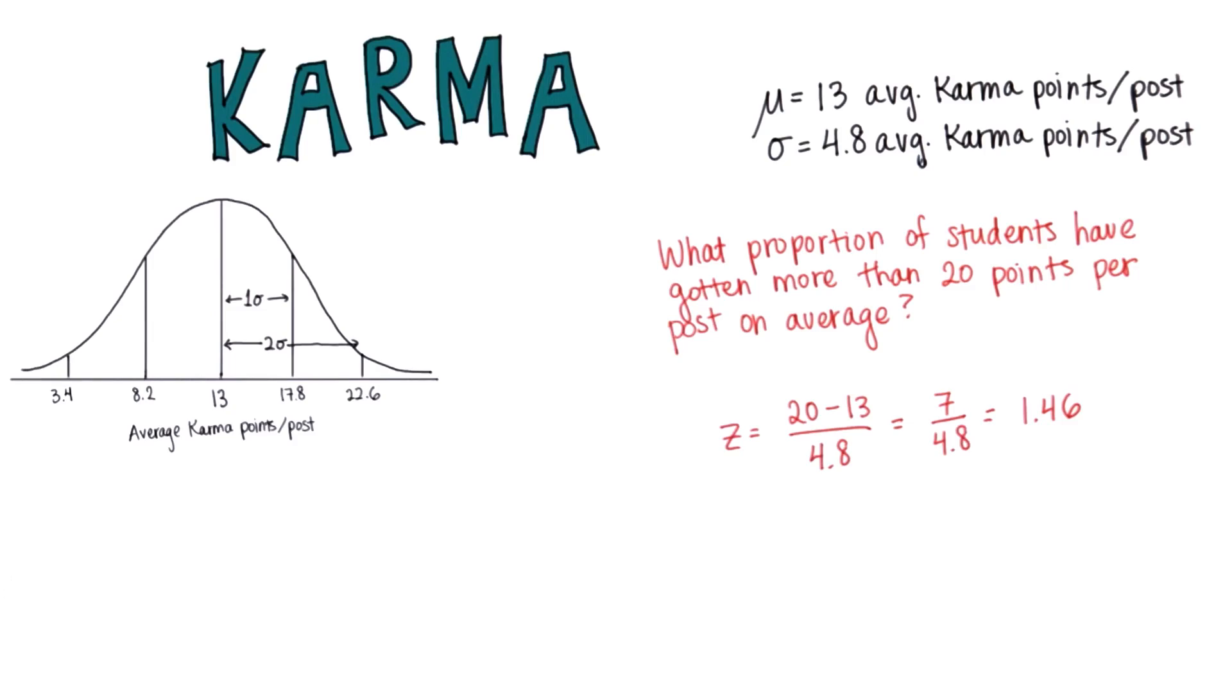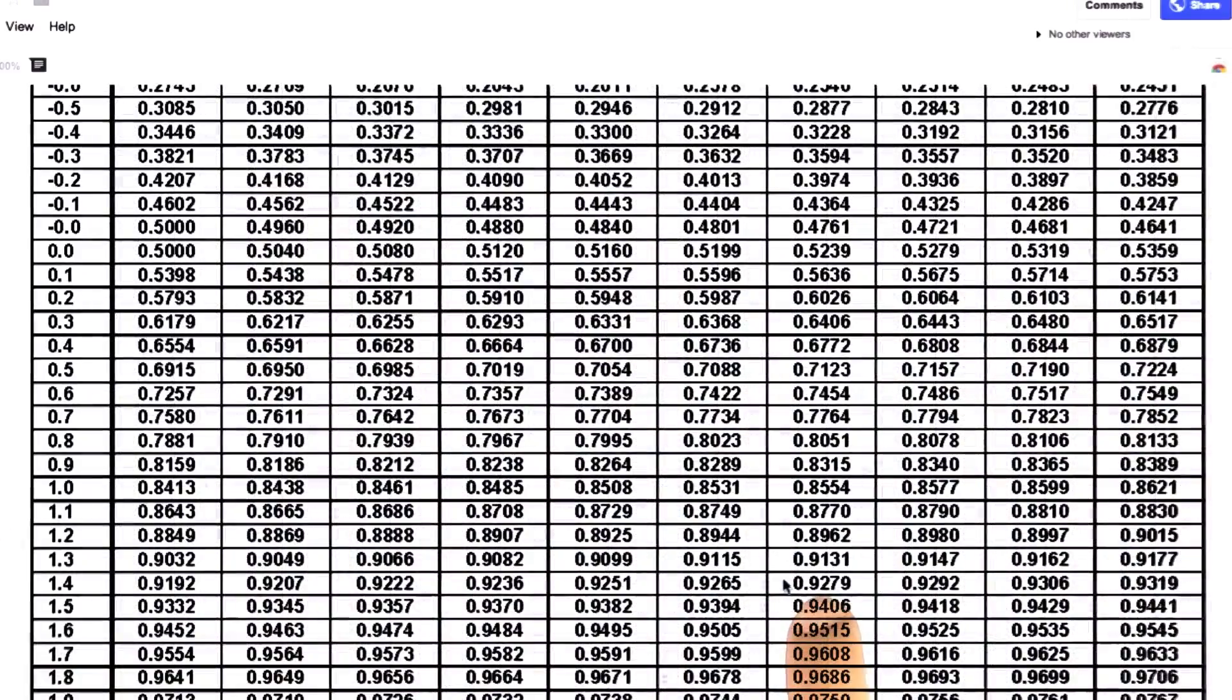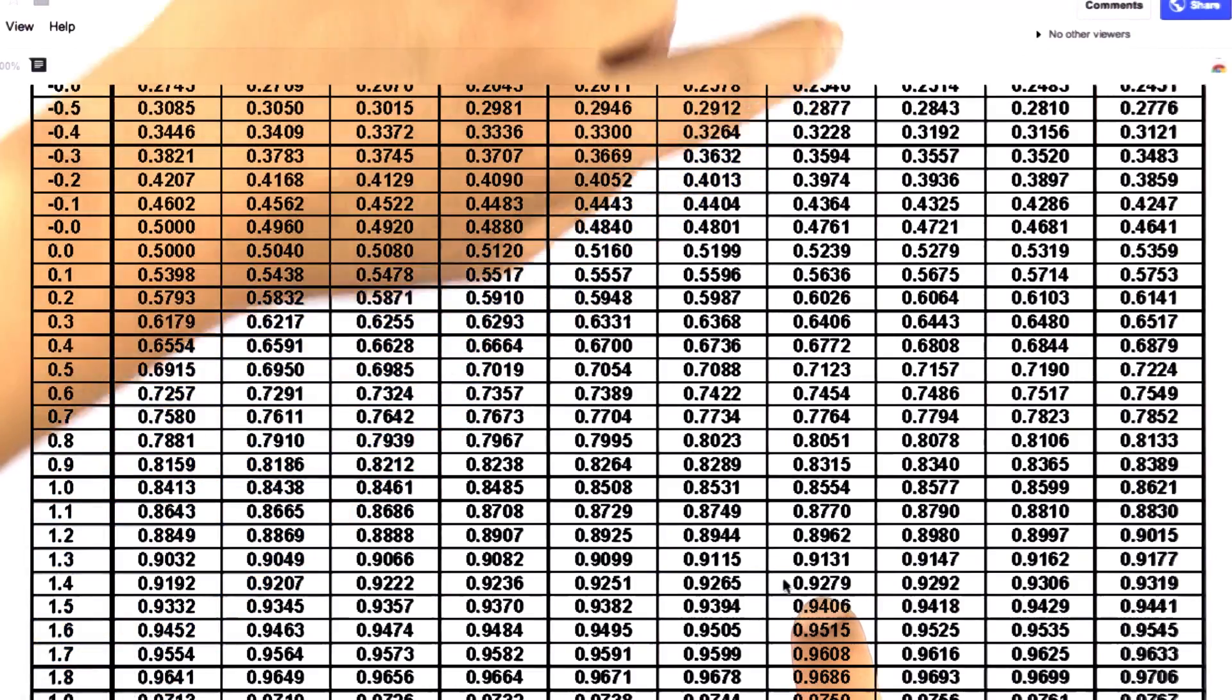Now let's bring up our z-table. So like I said before, if we have our z-score, we'll find the proportion less than that z-score. So let's start with that. The proportion less than 1.46 is 0.9279. Here at 1.4, and then the top of this column is 0.06.